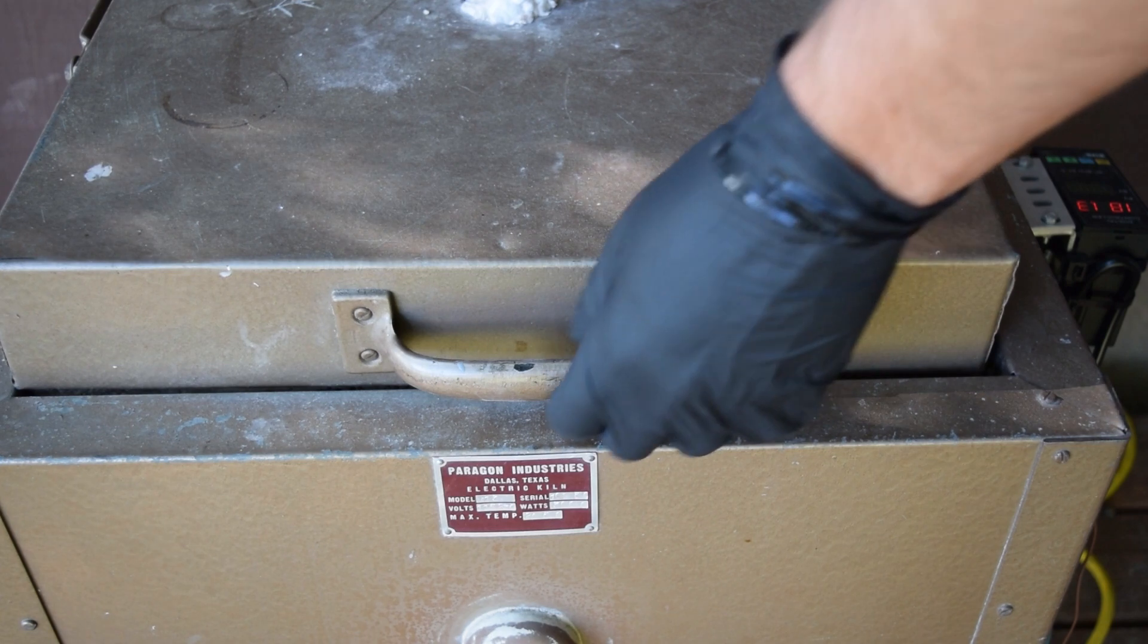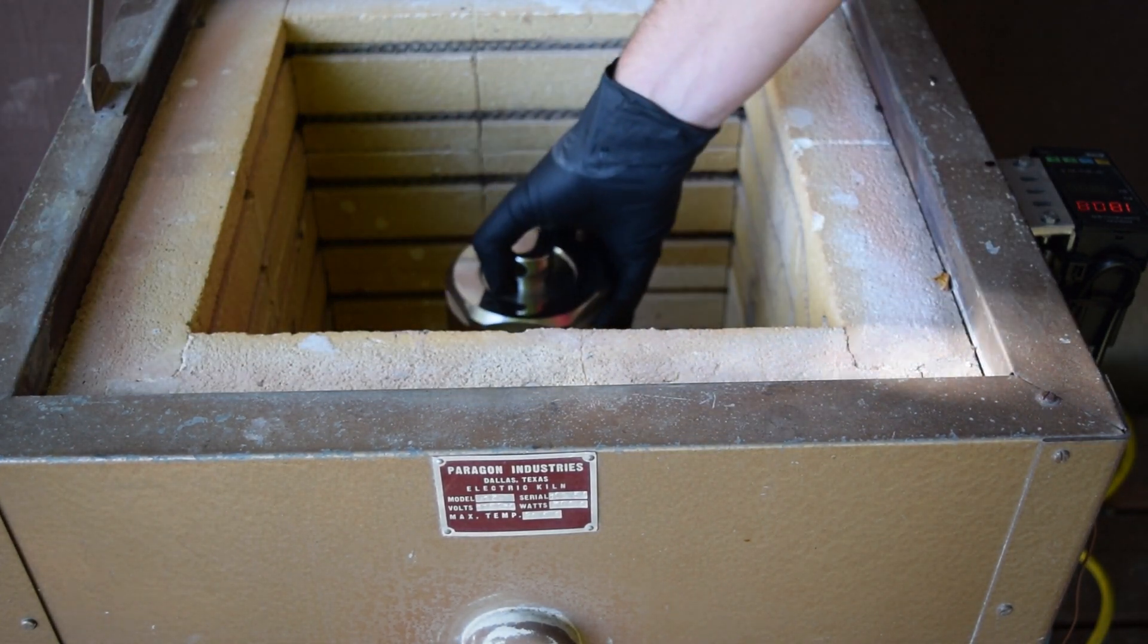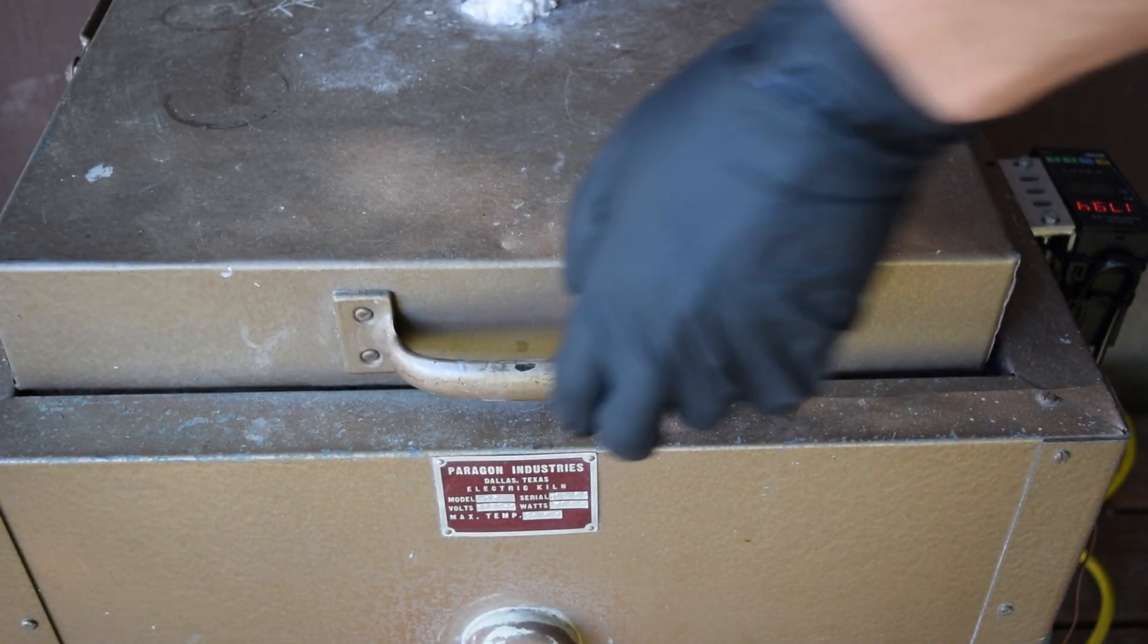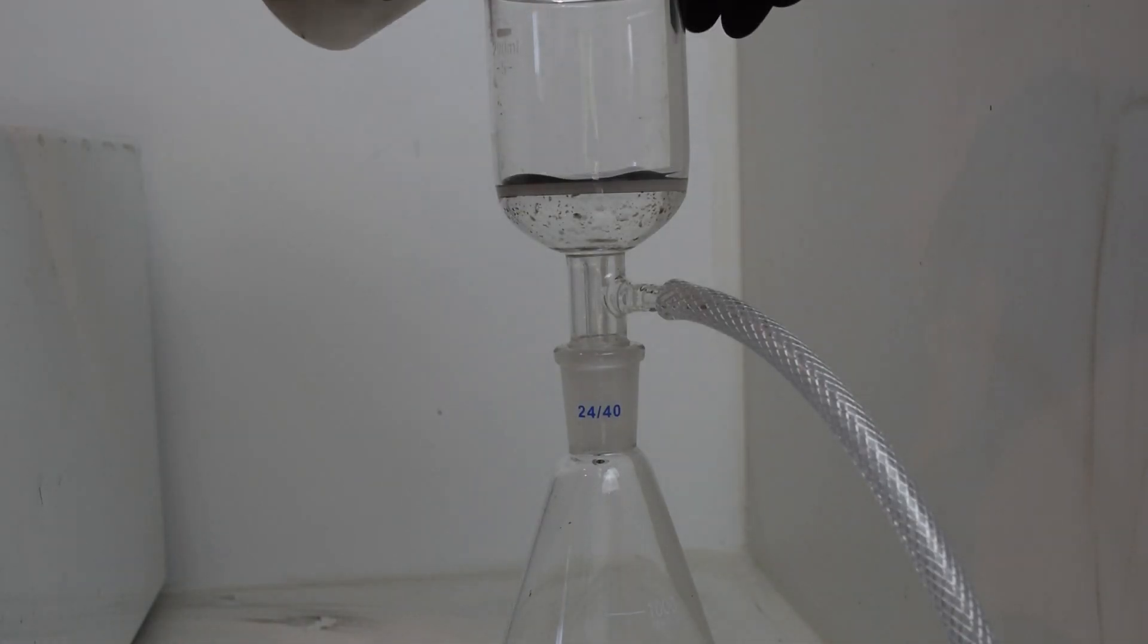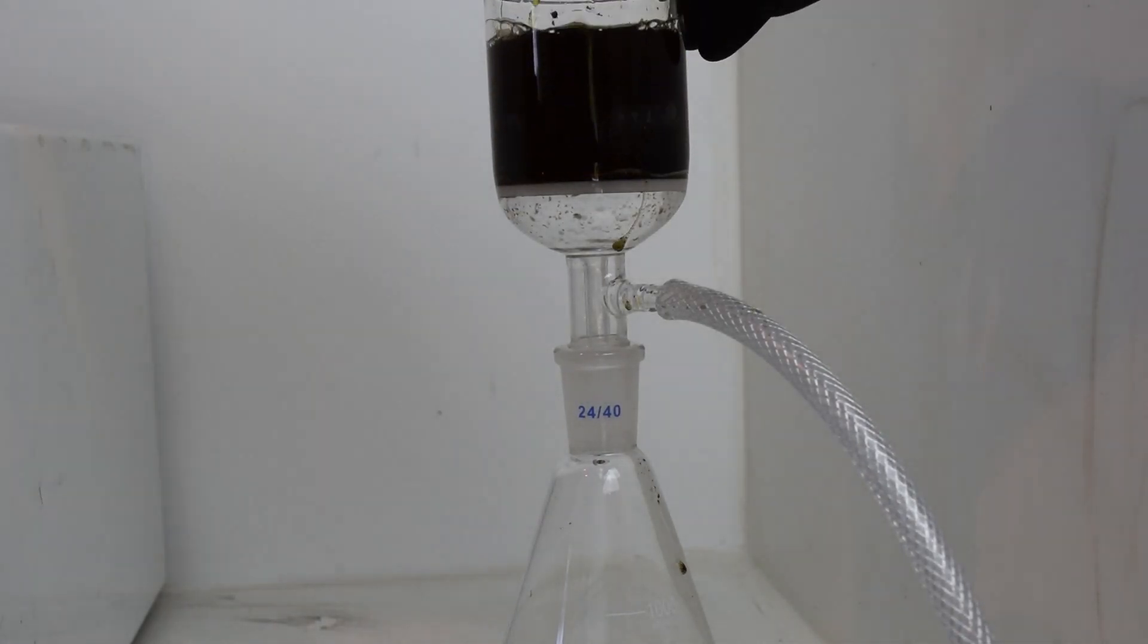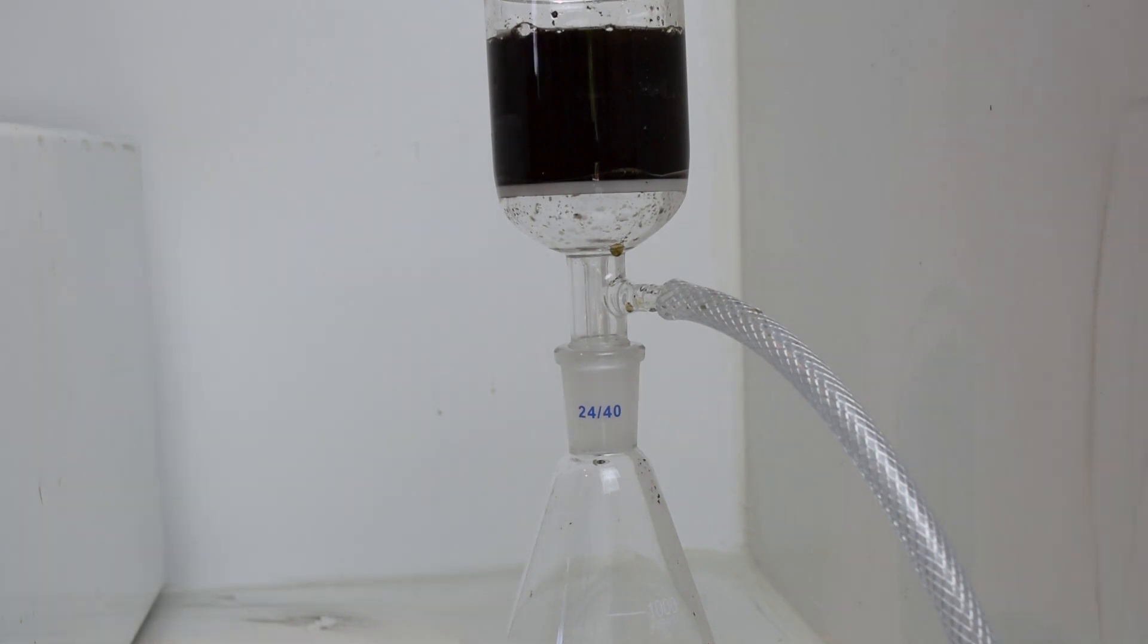After being sealed, the autoclave is heated at 180 degrees Celsius for 24 hours. The resulting biochar is then washed with about 500 milliliters of deionized or distilled water until the water runs clear.